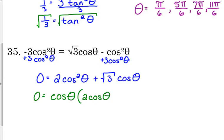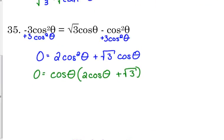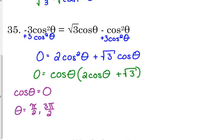We are left with cosine of theta times the quantity two cosine of theta plus the square root of three. After factoring, we set each piece equal to zero and solve. Cosine of theta is equal to zero — where is cosine equal to zero? Cosine is the x-coordinate, so where is x equal to zero? That's on the y-axis: pi over two and three pi over two.